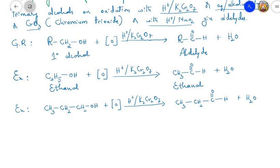In the general reaction, a primary alcohol has an –OH group attached to a carbon containing two hydrogens. When subjected to oxidation with acidified K₂Cr₂O₇, an aldehyde is formed. The two hydrogens and the oxygen are lost as H₂O, which is the oxidation process. For example, ethanol on oxidation with acidified K₂Cr₂O₇ gives ethanal. Similarly, propan-1-ol on oxidation with acidified K₂Cr₂O₇ gives propanal.